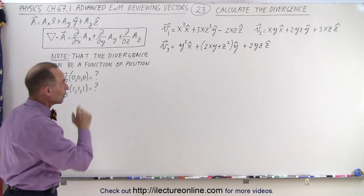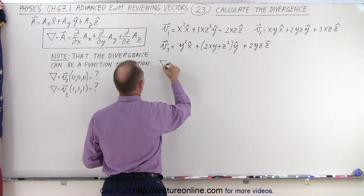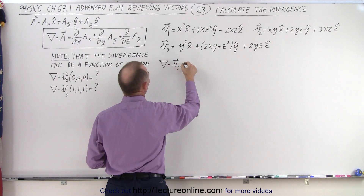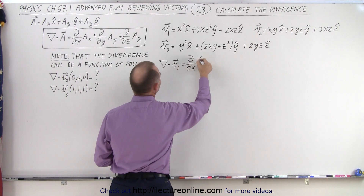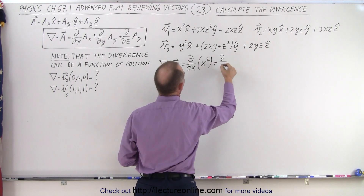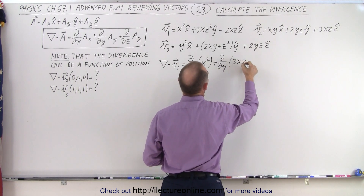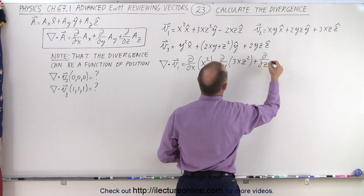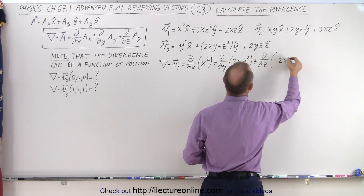So here we have the three vectors. Let's take the first calculation. We're going to take the del operator operating on v1, which is equal to the partial derivative with respect to x of the x component, which would be x squared, plus the partial derivative with respect to y of the y component, which is 3xz squared, plus the partial derivative with respect to z of the z component, which is minus 2xz.